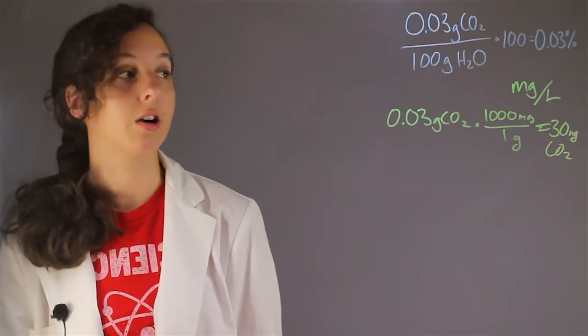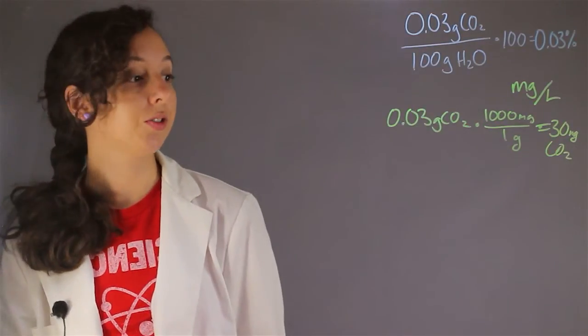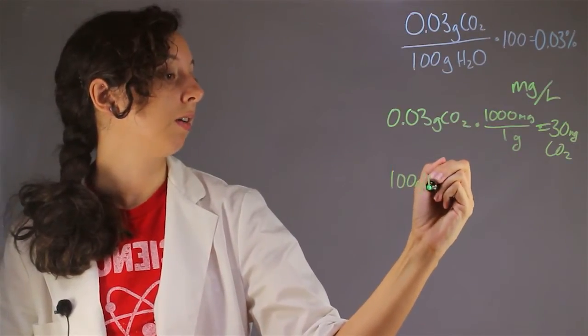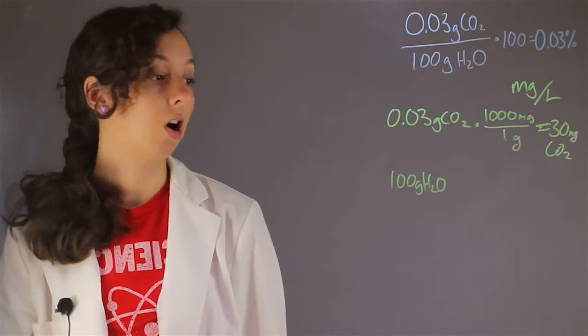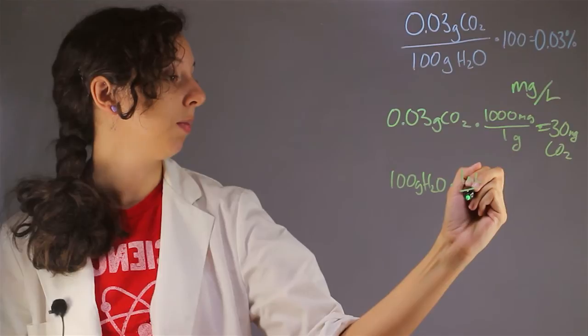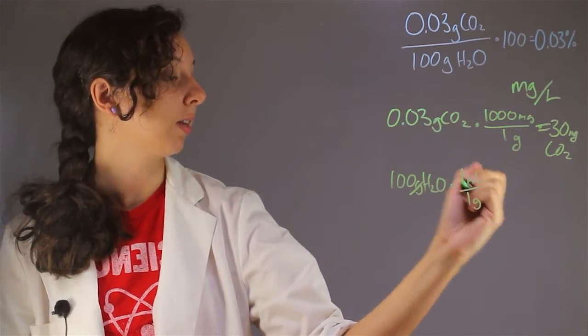Now, let's convert our 100 grams of water into liters. So if we have 100 grams of water, let's convert that to a volume unit. So one milliliter is the same as one gram. Cancel these guys out.